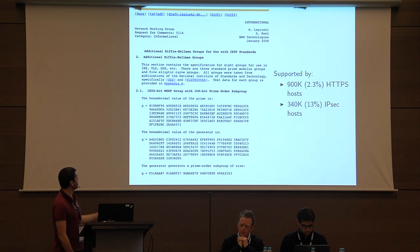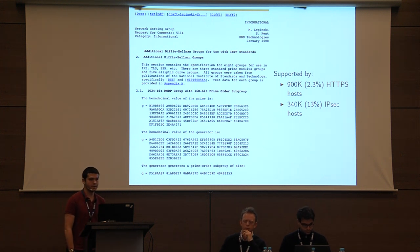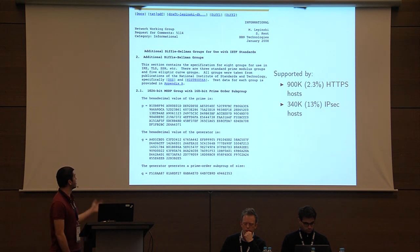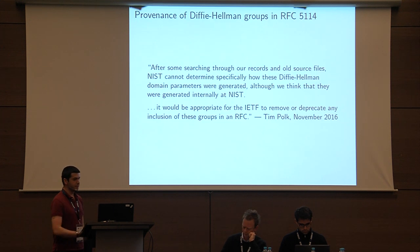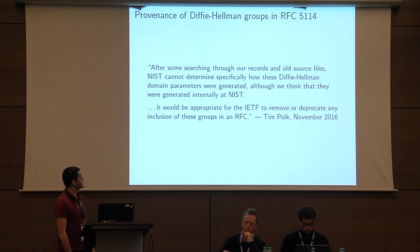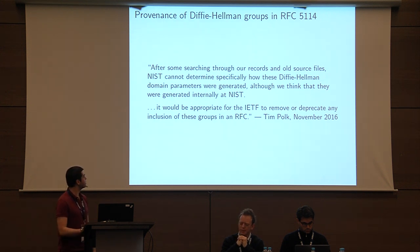Groups standardized in RFC 5114 also have no record of how they were generated. The first group defined there is a 1024-bit group with a 160-bit prime order subgroup, in use by about 900,000 web servers today — about 2.3% of HTTPS servers or about 10% of servers using finite field Diffie-Hellman. These primes are also used for IPsec and VPN servers, with about 13% supporting these groups. The document says they were drawn from NIST test data, but when we released our paper, Tim Polk from NIST basically said these probably came from NIST but we have no record of how we generated them, and it would probably be a good idea to deprecate them.